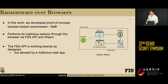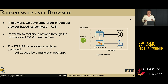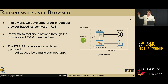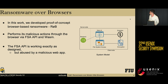Specifically, it interacts with the local file system of the user by utilizing the File System Access API. And it utilizes a WebAssembly-based encryption module to encrypt the files of the user from the browser. It is worth noting that ROP does not exploit any vulnerabilities within the FSA API. Instead, it abuses the inherent functionality of the FSA API.